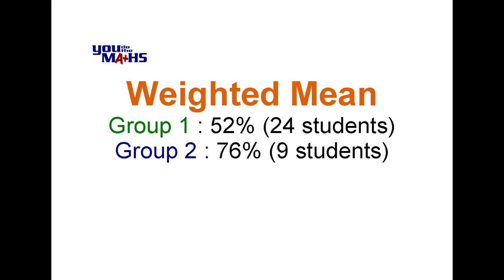Now some people might just add the two different means up and divide them by two, but that's not correct because what we've got is one group with 24 students and another group with nine. So group one is going to dominate this combination, so we'd expect the weighted mean to be closer to 52 than 76.